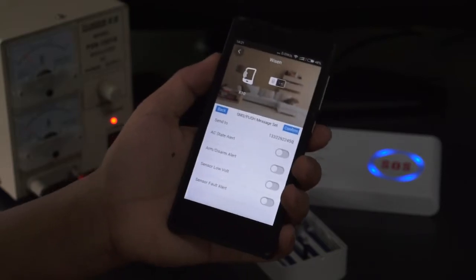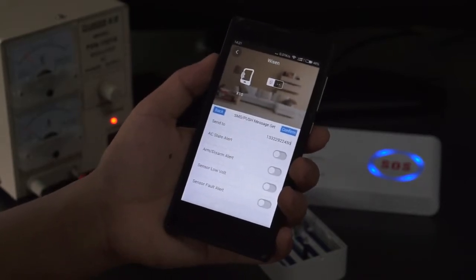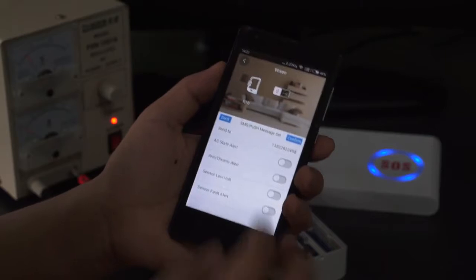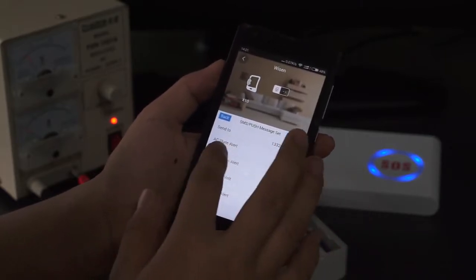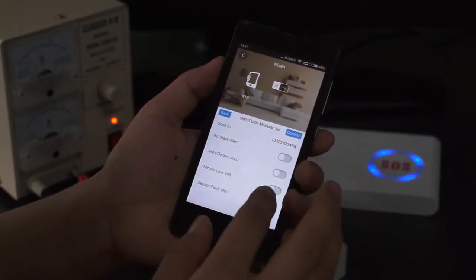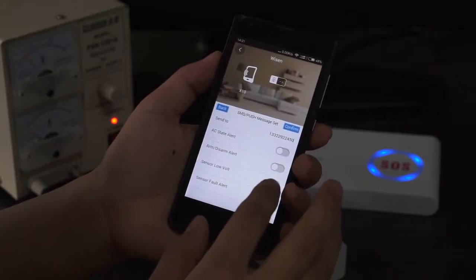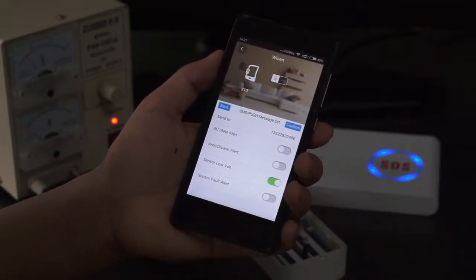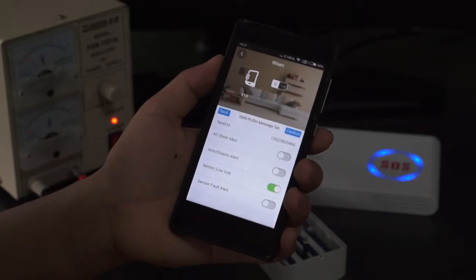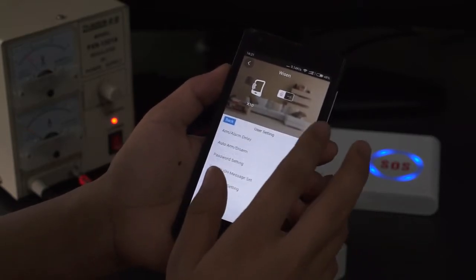Then we can select the event we want to receive. So it includes the AC state alert, arm disarm alert, sensor low voltage alert, and sensor fault alert. So we choose the sensor low voltage. Then we click confirm.